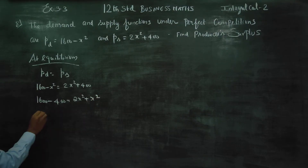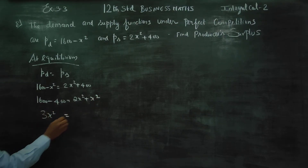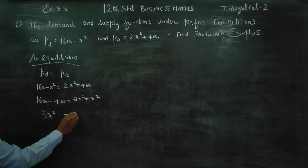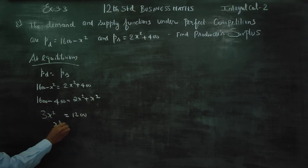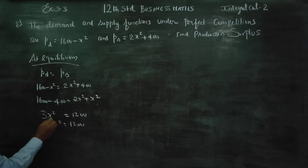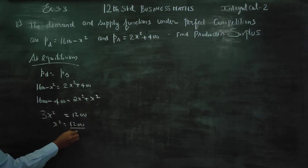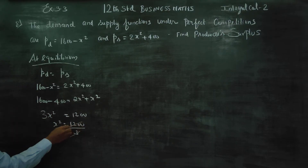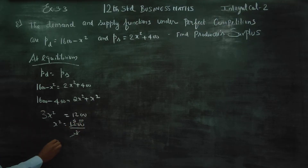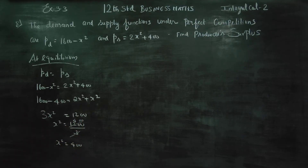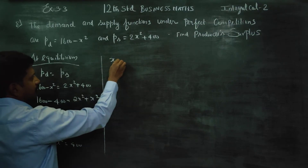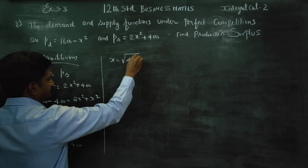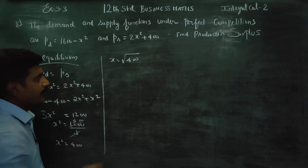So 3x squared equals 660. Dividing by 3, x squared equals 400. Therefore x equals the square root of 400.